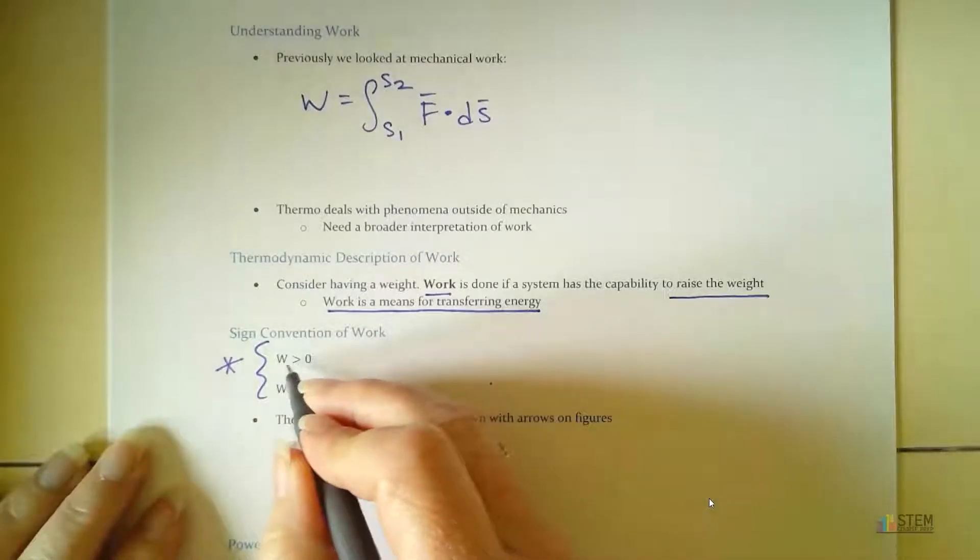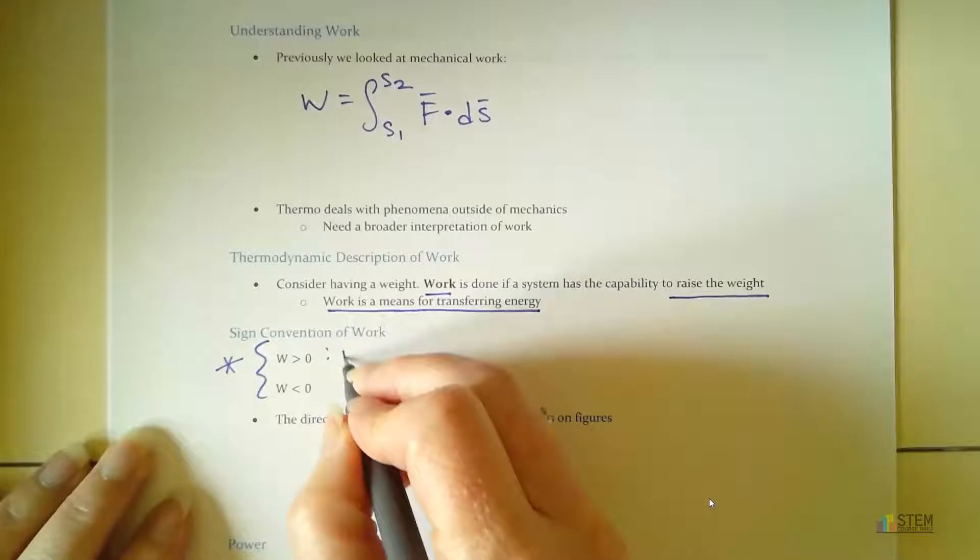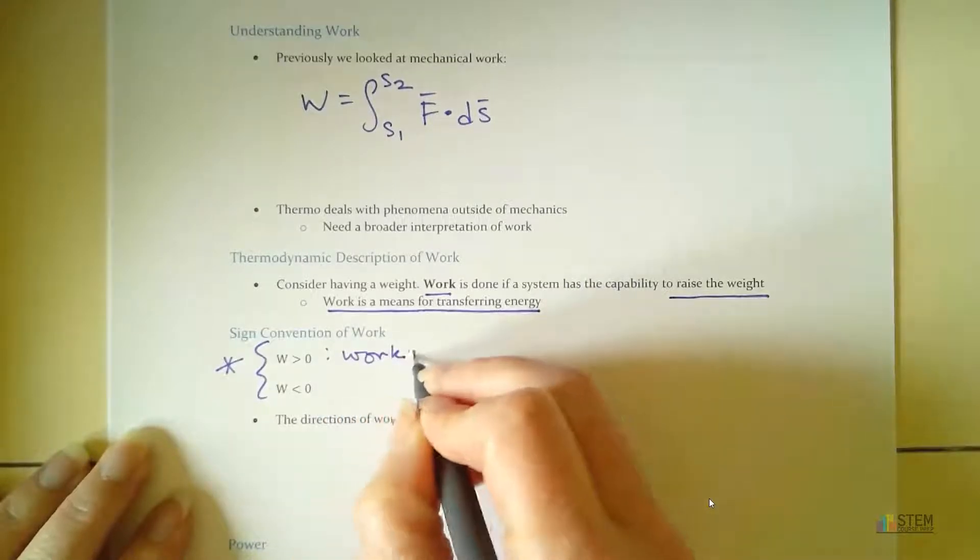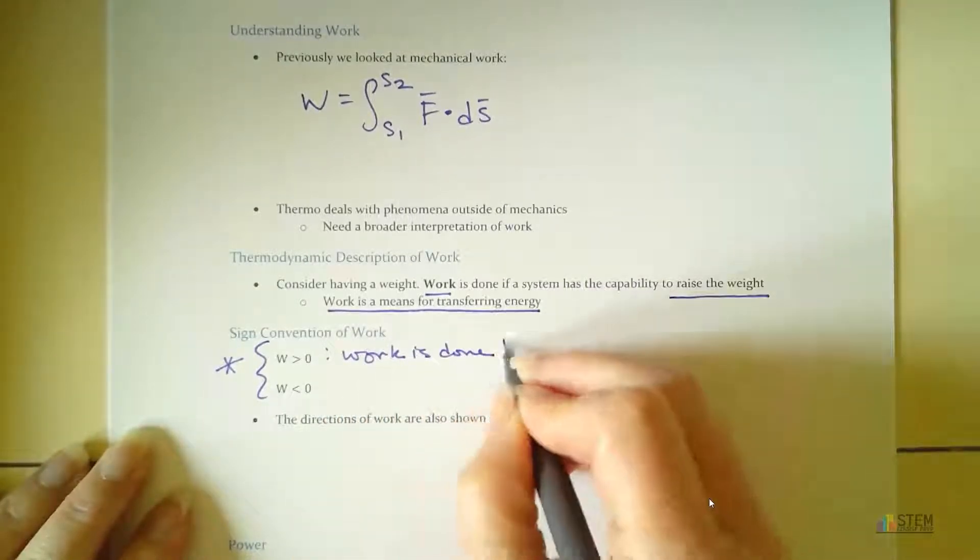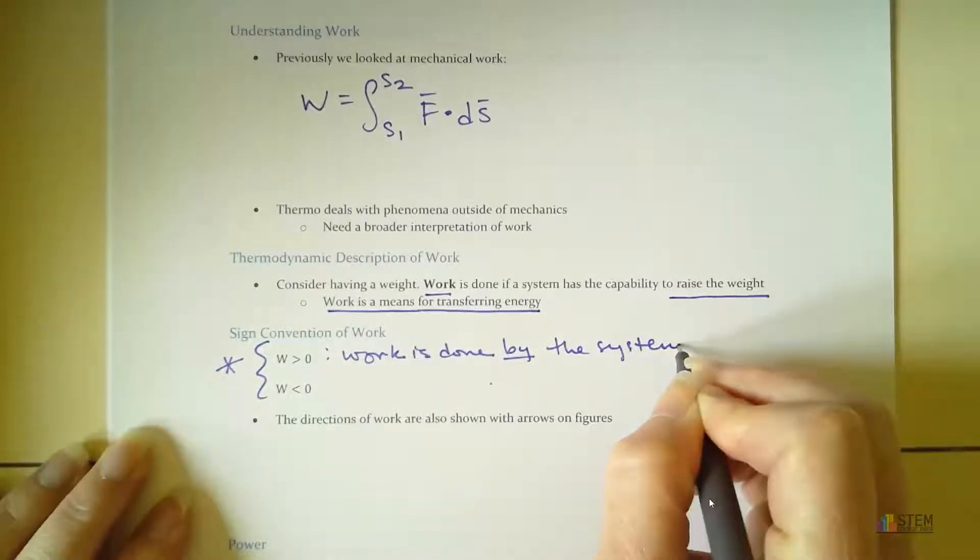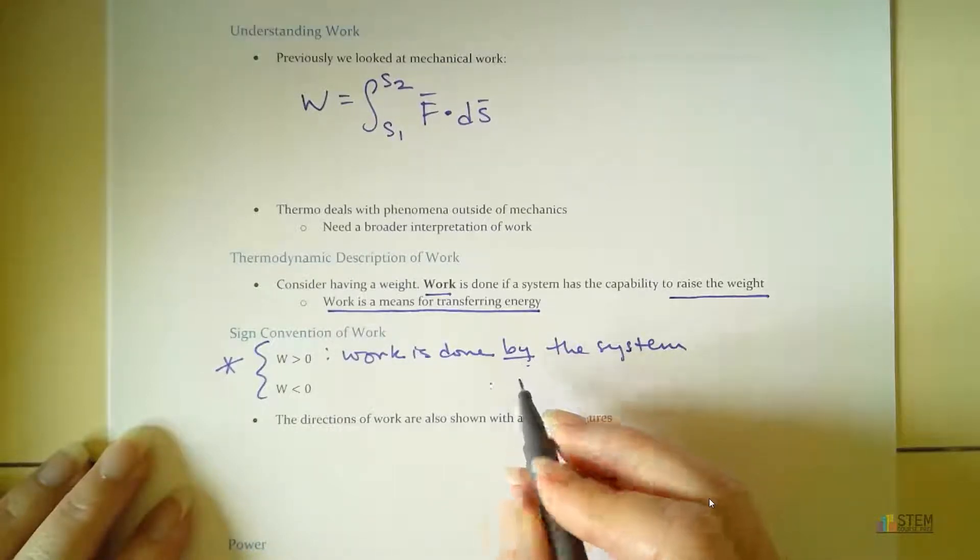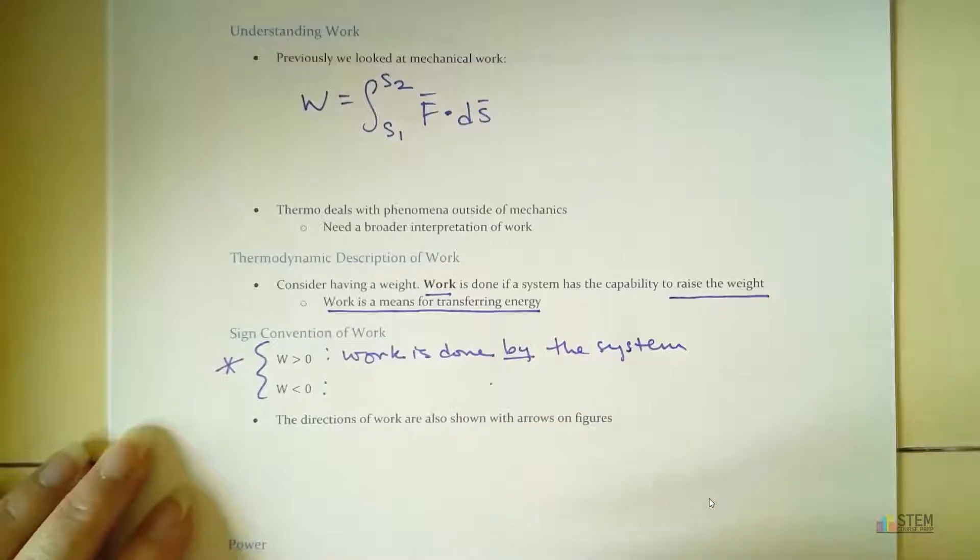So if work, which is W, is greater than zero, we're going to say that work is done by the system. Okay, so it's done by the system. This word 'by' here is the important word. Okay, and you'll see why when we get to the examples.